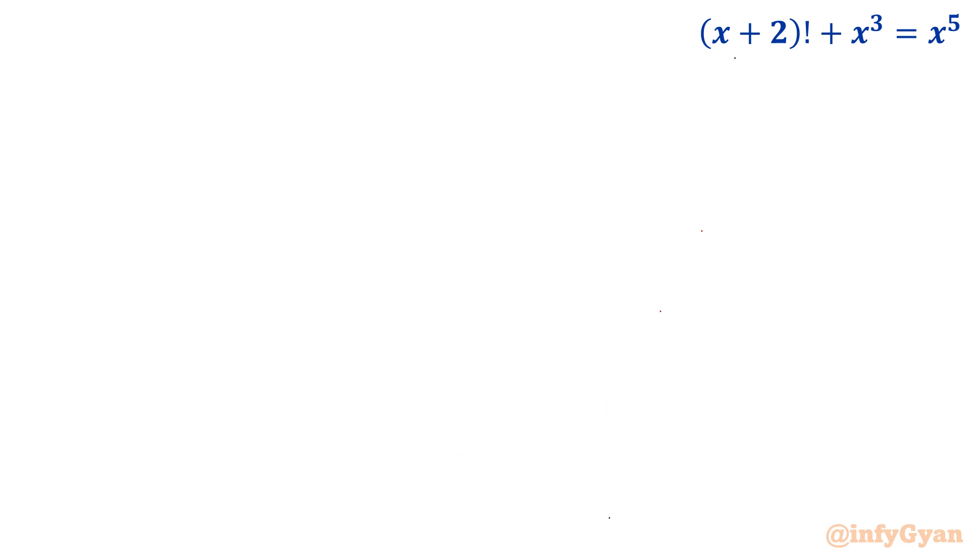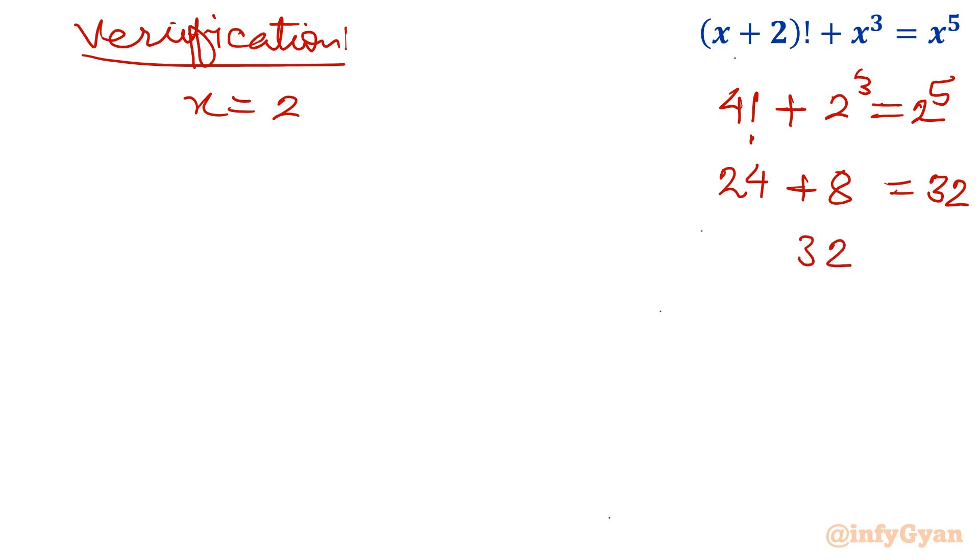Verification: x equal to 2. Quickly we can verify 4 factorial plus 2 cubed equal to 2 to the power 5. 4 factorial is 24, 2 cubed is 8, 2 to the power 5 is 32. 32 is equal to 32. That means verified. This solution is verified.